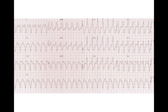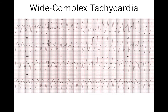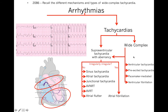Please interpret this ECG. This is an example of a wide complex tachycardia — the heart rate is tachycardic and the QRS is very wide. The differential of a wide complex tachycardia includes ventricular fibrillation, pacemaker-mediated tachycardia, pre-excited tachycardia, or ventricular tachycardia. In this case there are no pacemaker spikes, so it's not pacemaker-mediated. The rhythm is organized and monomorphic, so it's not ventricular fibrillation. So it's either pre-excited tachycardia, ventricular tachycardia, or SVT with aberrancy.